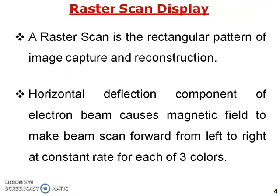A raster scan display uses rectangular patterns of image capture and reconstruction. There are two methods to maintain the picture: raster scan display and random scan display. In raster scan display, the whole screen is refreshed from top to bottom and left to right to reconstruct the pictures.